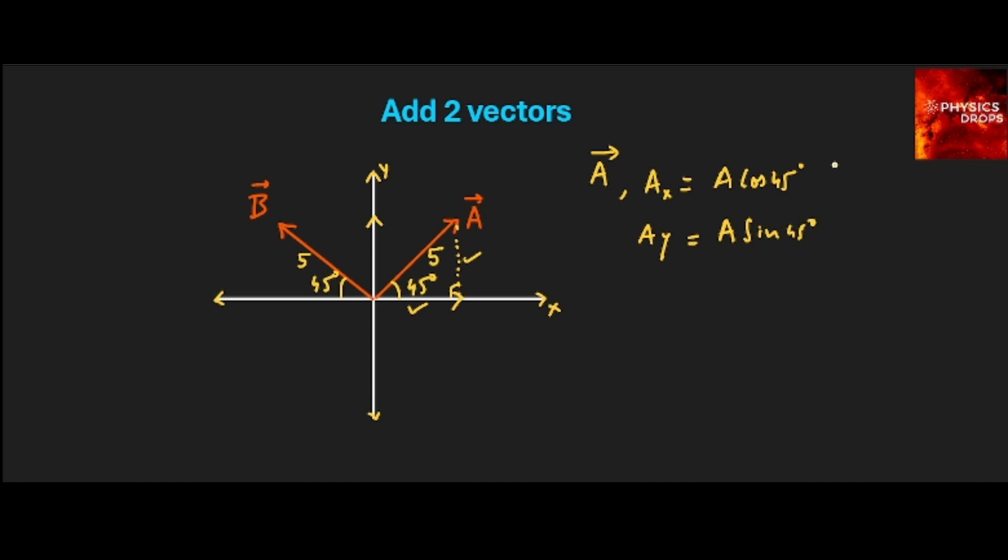So, A cos 45 and A sin 45 is how A resolves as x and y components. And B vector similarly, we will get Bx will be somewhere in this side, but please note this is on the negative direction of x-axis, so this will be B cos 45 with a negative sign. Similarly By will be same as Ay, goes in the positive y direction, so this will be B sin 45. These are the components of B vector.